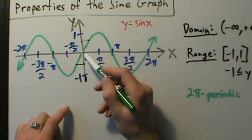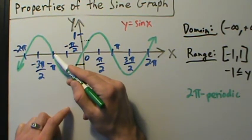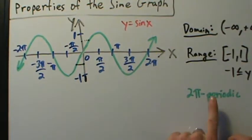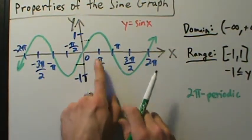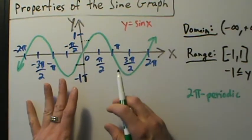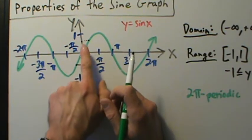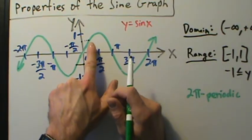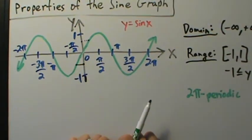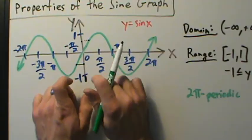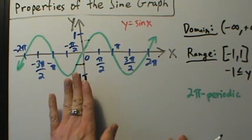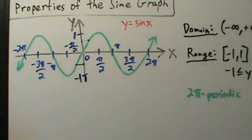For example, if x equals negative pi, the y value is 0. If we go 2π units to the right, we'll be at a point where the y value is also 0. This 2π periodic property means: whether you start at a nice value like 0, pi over 2, or pi, or some unusual value like pi over 7 or 1.43 radians, if you go 2π units to the right or left, you'll have the exact same y coordinate. That's what 2π periodic means in terms of the graph.